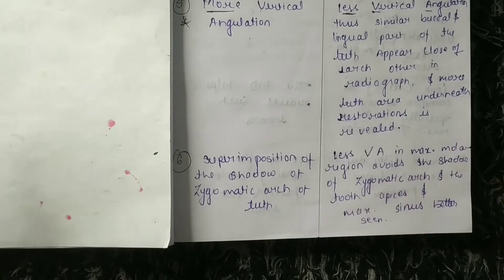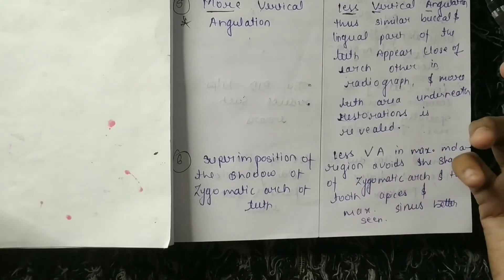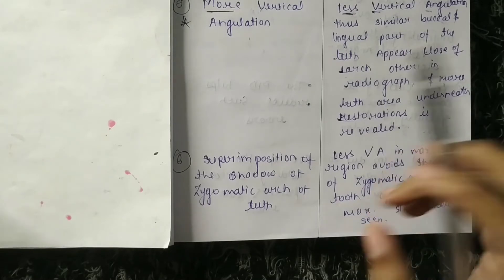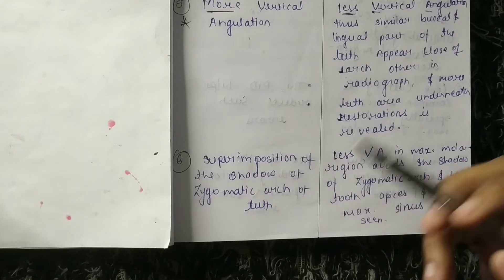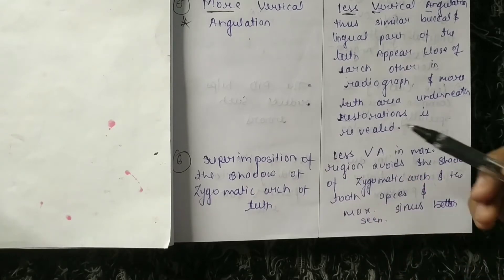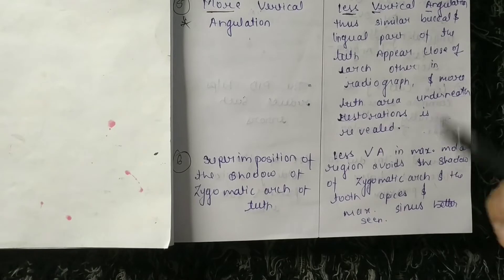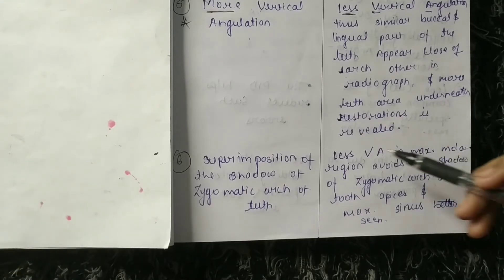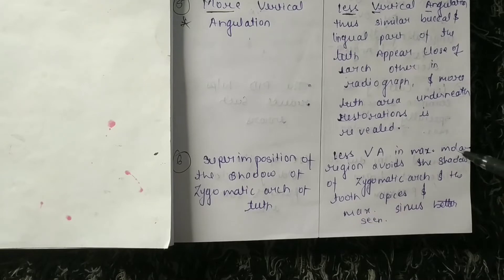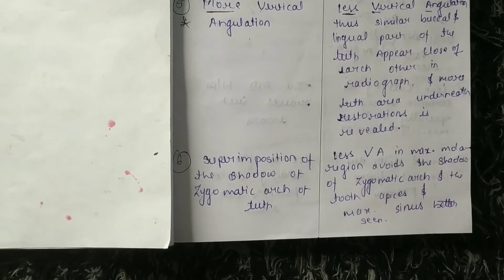The sixth difference relates to superimposition. Just as the shadow of the alveolar bone appears in interproximal spaces in short cone, you also see superimposition of the shadow of the zygomatic arch. In long cone, less vertical angulation in the maxillary molar region avoids the shadow of the zygomatic arch, so we will not see that shadow.